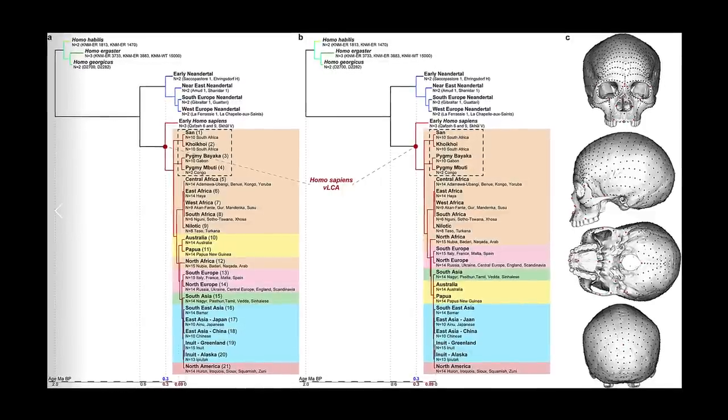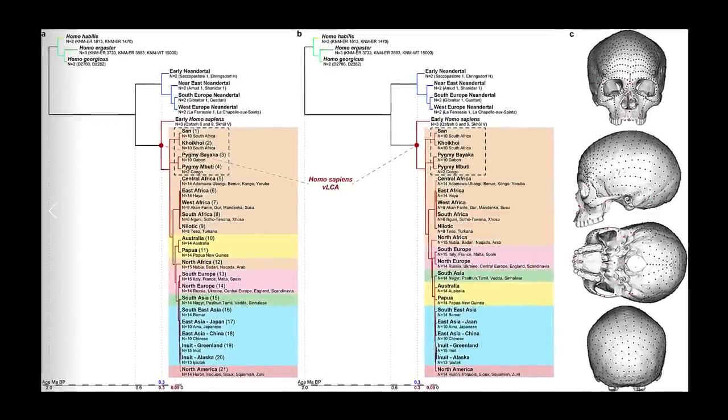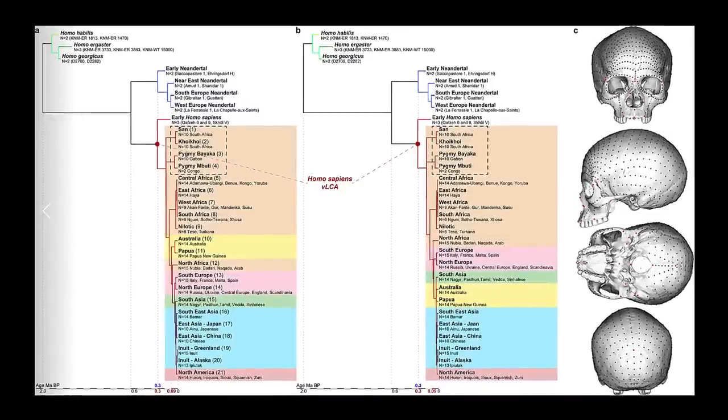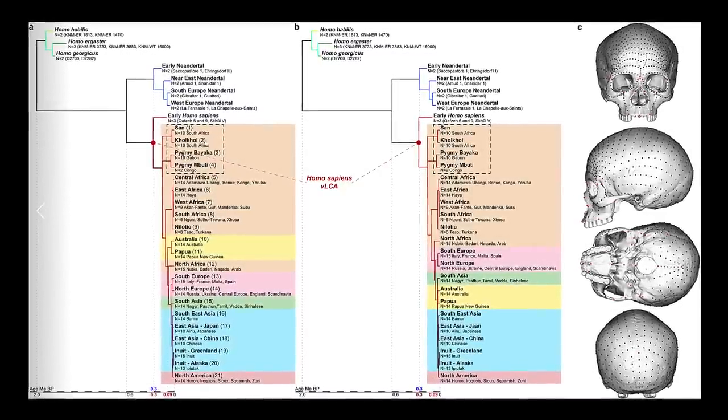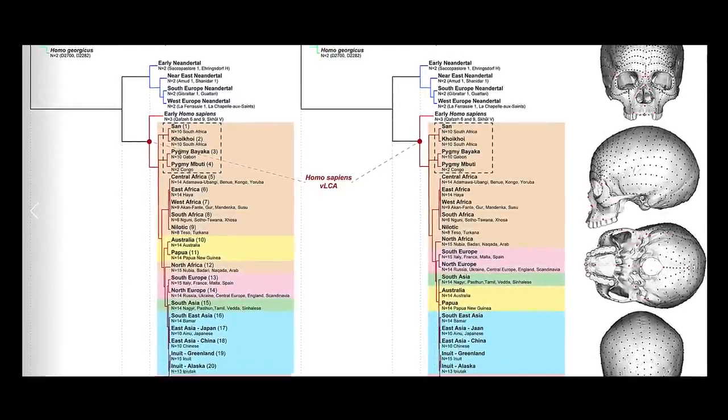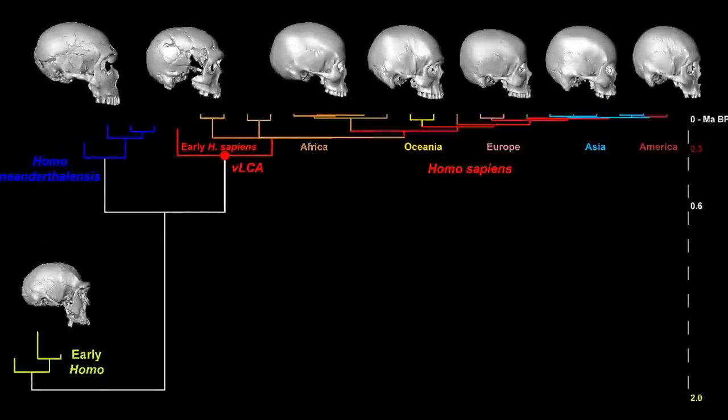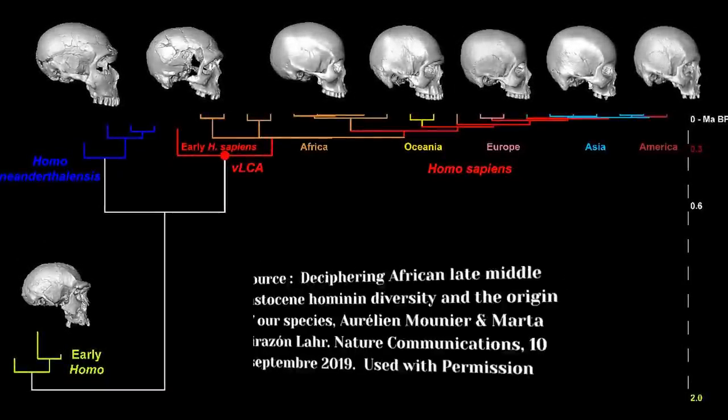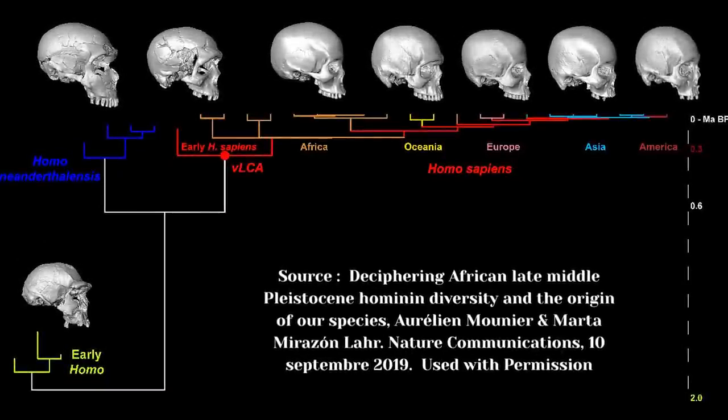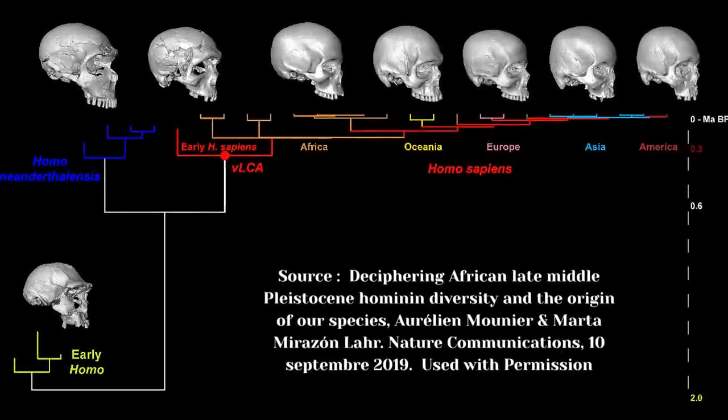However, in a paper titled Deciphering African Late Middle Pleistocene Hominin Diversity and the Origin of Our Species, scientists created what they called a virtual last common ancestor of all living humans. By mapping the morphological variety of the skulls of ancient and contemporary humans,